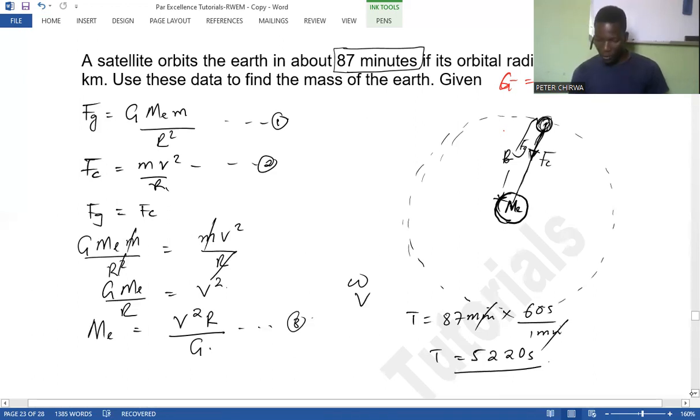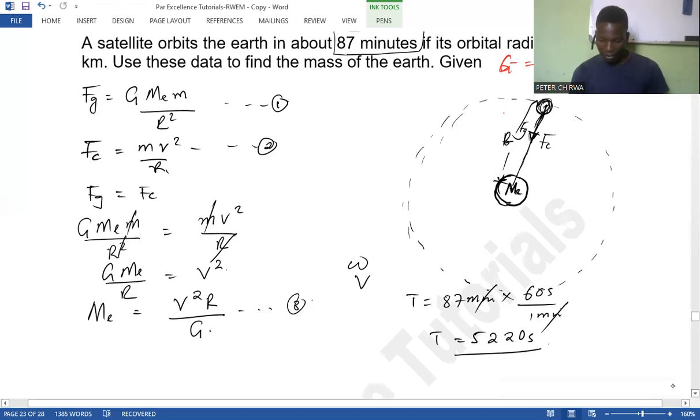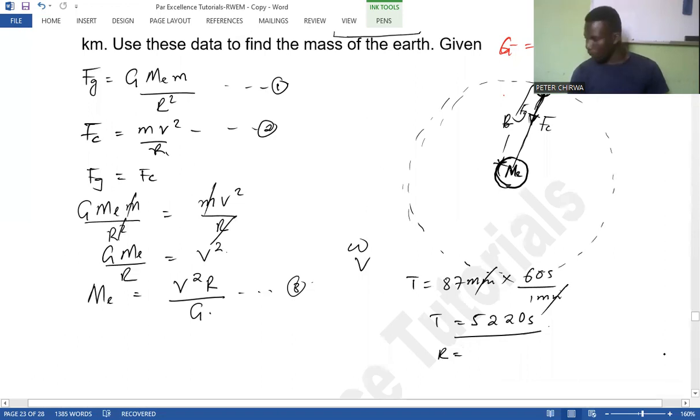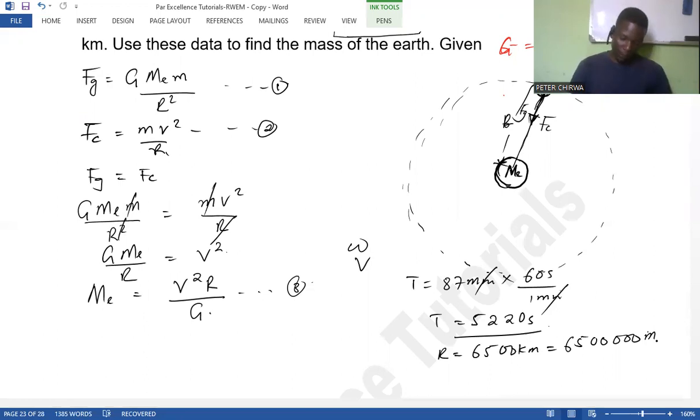So this is our period. Now, the radius we have already been given to say the radius is 6,500 kilometers, which in standard is going to be 6,500 times 10 to the power 3 meters. What we don't have now is the velocity.